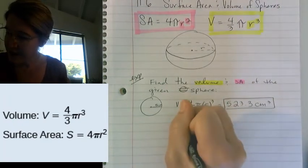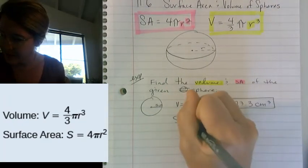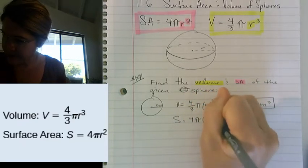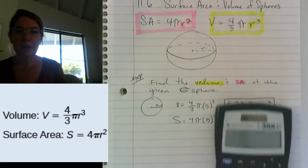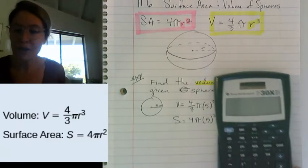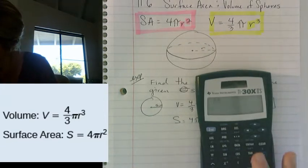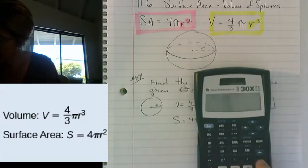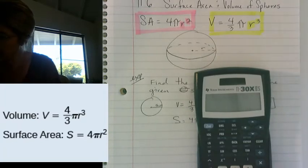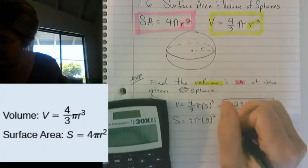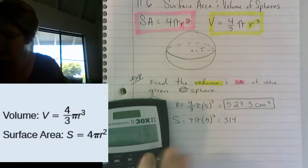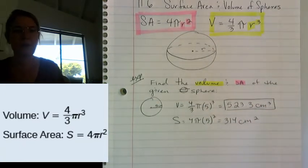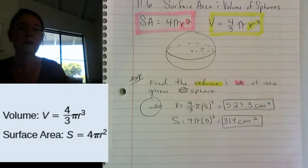And then for surface area, same thing. We're just going to plug in. So surface area is 4πr². My radius is 5 squared. Again, when we plug it in our calculator, you want to do your exponents first. So that's 5 squared, which is 25 times 4 times 3.14. And we get 314, and it was centimeters squared. Alright, so easy peasy, lemon squeezy.